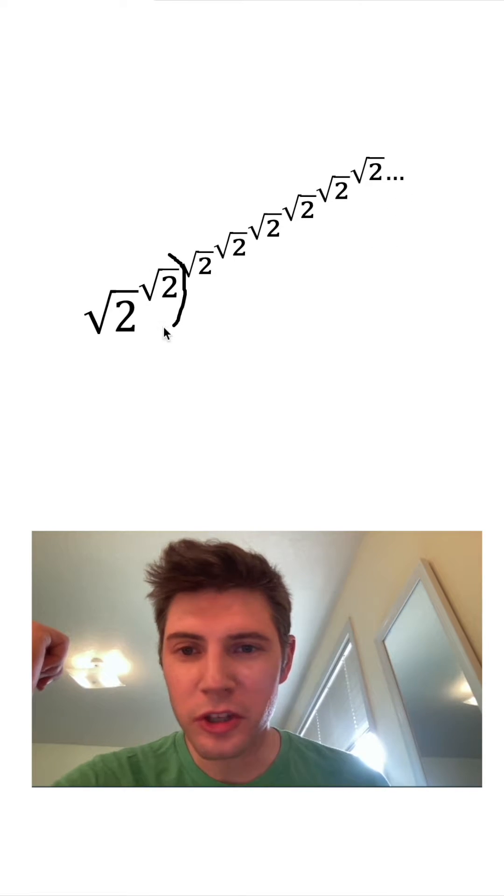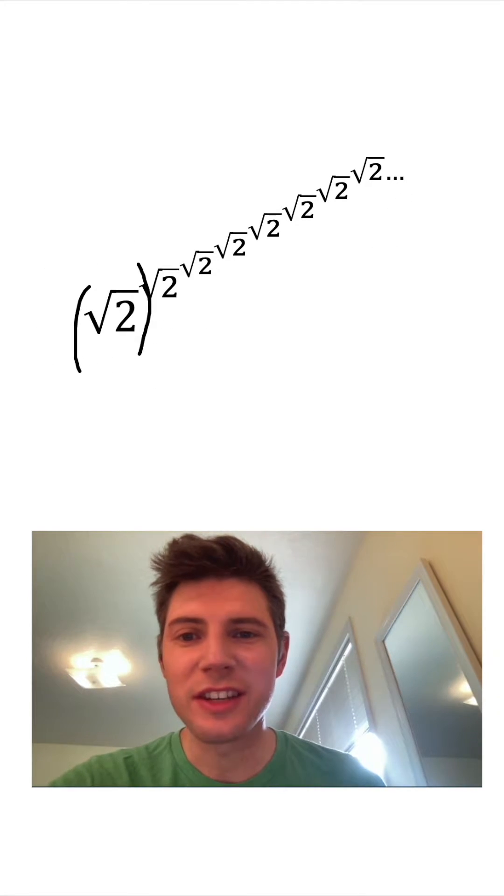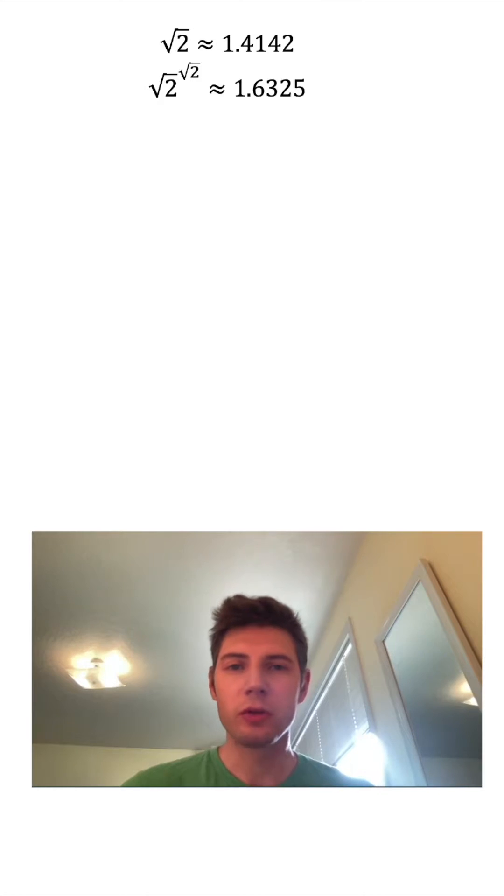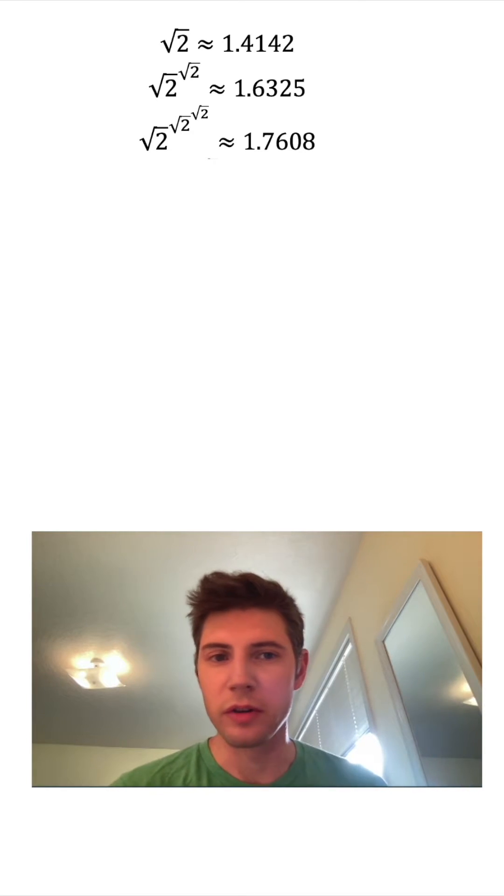Even though we're not supposed to go this way, we can still kind of see what it approaches by doing that method. So if we have the square root of two, that's approximately equal to 1.4142. Square root of two to the square root of two is 1.6325. And the square root of two to the square root of two to the square root of two, that'd be 1.7608 and so on.